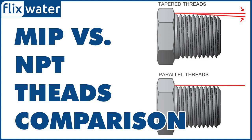NPT threads are sealed with Teflon tape while MIP fittings use pipe dope. While the threads on both NPT and MIP fittings allow them to adhere tightly to pipes, they still need a sealant to prevent leaks. Generally, Teflon or PTFE — polytetrafluoroethylene — tape is wrapped around NPT threads to secure their seal. MIP fittings are most commonly sealed with pipe dope, which is a paste that's applied to the threads.